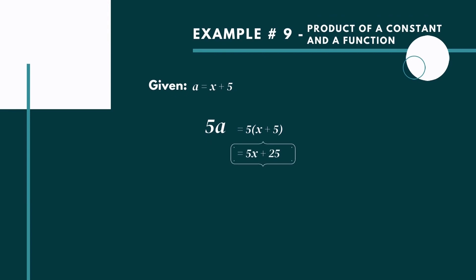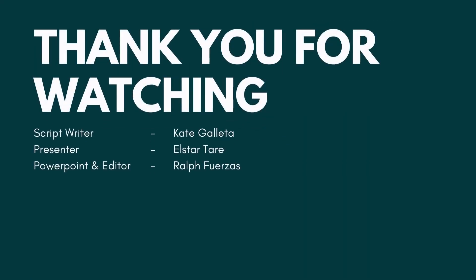And lastly, the product of a constant and a function. Given a(x) equal to x plus 5, for example 5a: 5 times a(x) means we multiply 5 times x, which is 5x, and 5 times 5 is 25. So our final answer is 5x plus 25. That's all about operations on functions. Thank you and God bless.